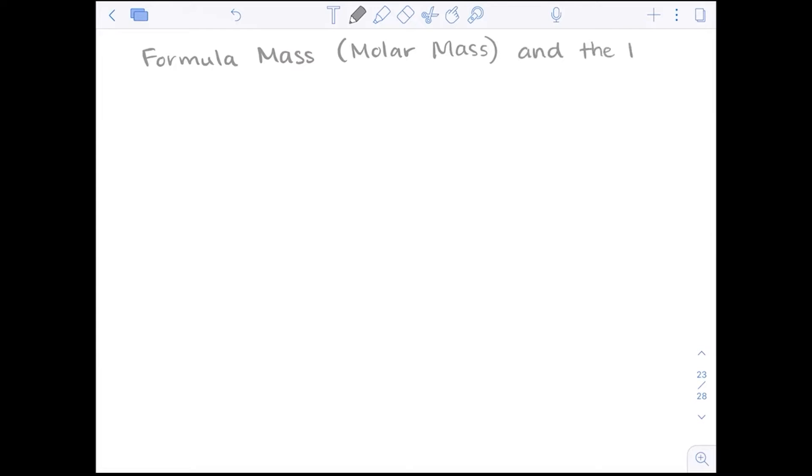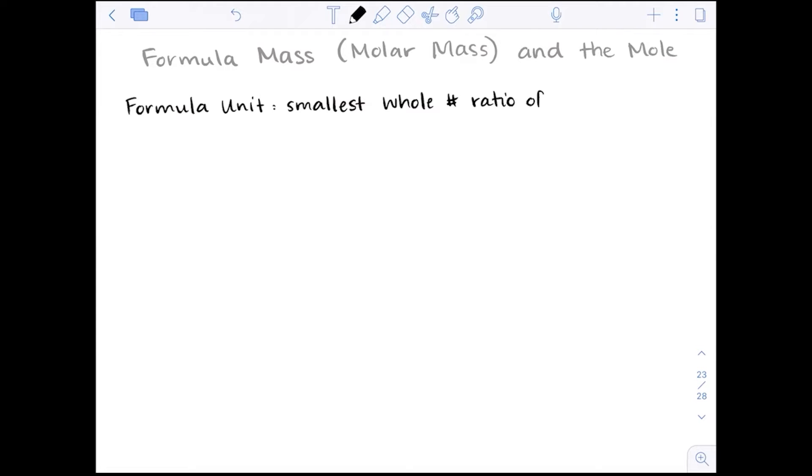And the mole. We briefly discussed what the mole is and we're going to investigate it a little bit more now as it relates to the molecules and compounds that we just built up in this chapter. Just as we've had a formula unit, which is the smallest whole number ratio of ions that would be in an ionic bond.